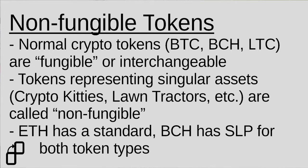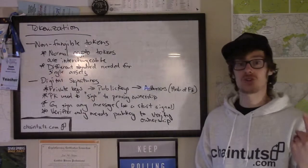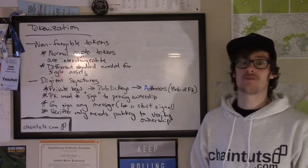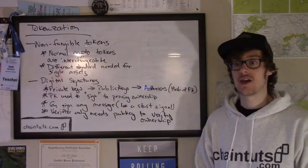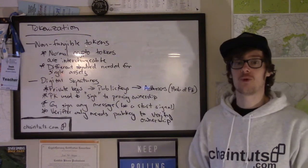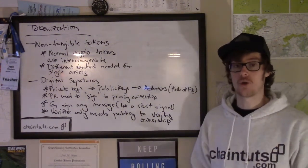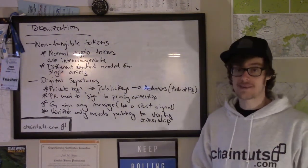You can issue a regular old token like the SPICE token using SLP, or you could also issue a token that is considered to be non-fungible, that represents unique real-world assets. One easy way to do that, which I did for this prototype, is to simply issue a token where there's only one unit of currency. So when I created my lawnmower token for this proof of concept, I simply created a token that only has one token issued and it's not subdivisible. So anytime I go to trade that token to a different address, it's non-fungible, because there's only one token that represents one singular asset.